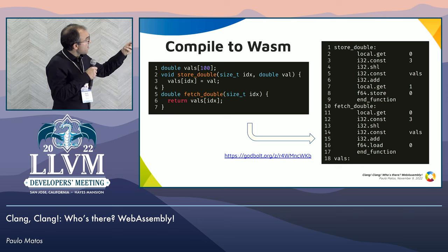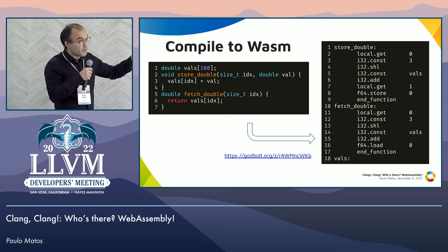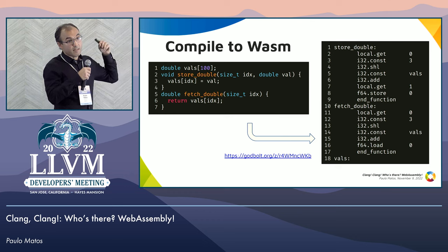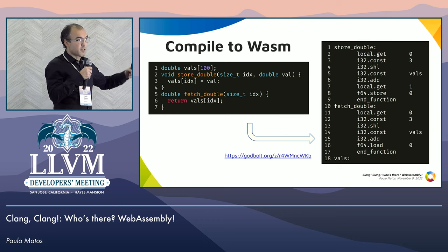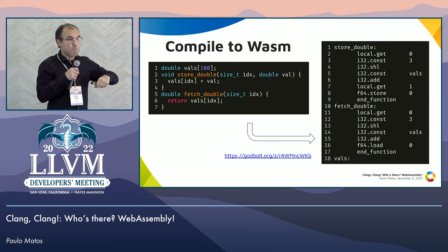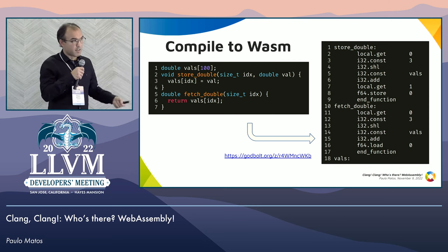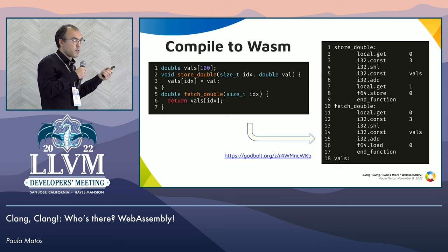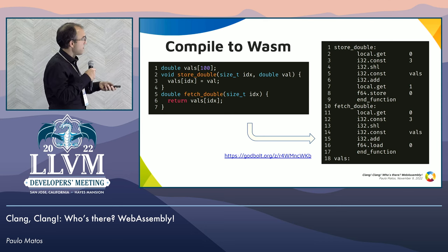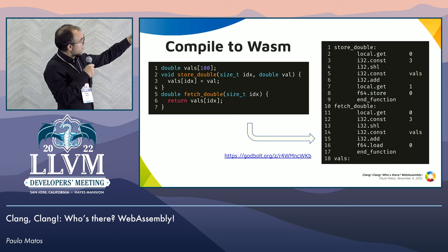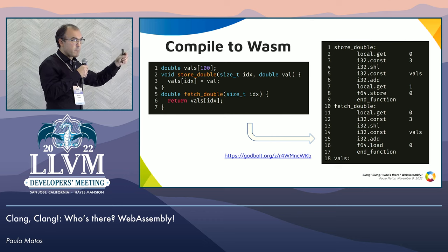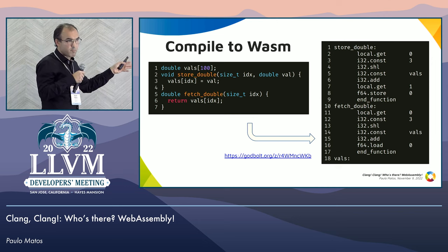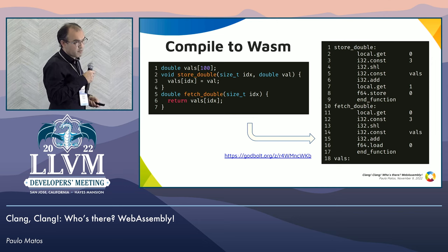One thing you might wonder is what is that F64.store zero? The store is, obviously, storing something into memory. The zero is the index of the memory, because there was this idea that you could have many linear memories inside a WebAssembly module provided by the host system. The zero is the memory you're going to use to store the top two values on the stack — one is the index in linear memory where you want to store the value, and the other is the value itself. Fetch double is more or less similar but uses a load instruction instead.